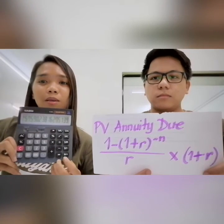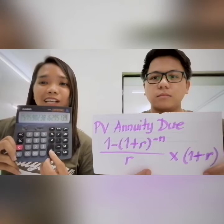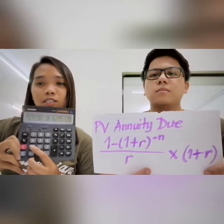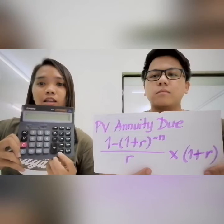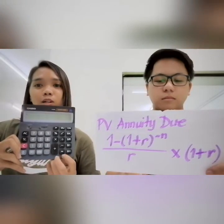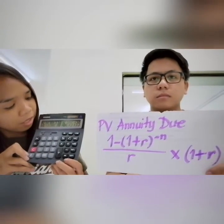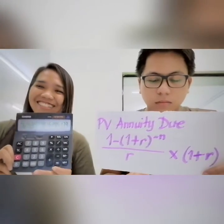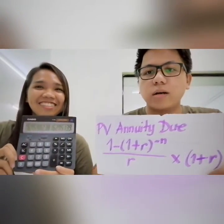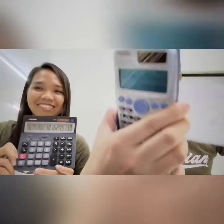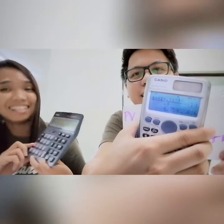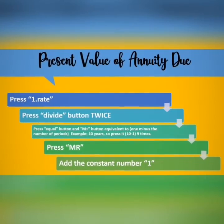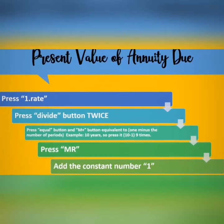After memory recall, we add plus 1 — 1 is constant, so it's always 1 — and then press equals. So your present value of an annuity due is 6.759, which is the same result: 6.759.